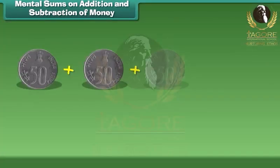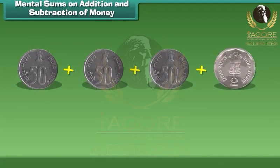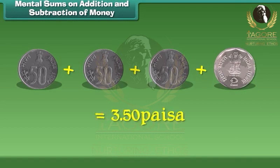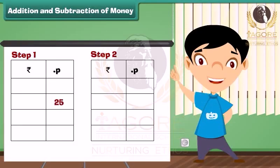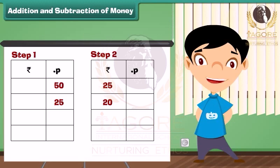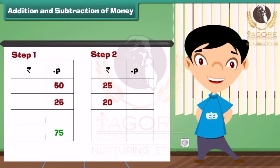Now I have three 50 paise coins and a 2 rupee coin, which is equal to 3 rupees 50 paise. Let us learn how to add 25 rupees 50 paise and 20 rupees 25 paise. Step 1: Add the numbers in the paise column — 50 plus 25 equals 75 paise. Write 75 under the paise column. Step 2: Add the numbers in the rupees column — 25 plus 20 equals 45 rupees. Write 45 under the rupees column.